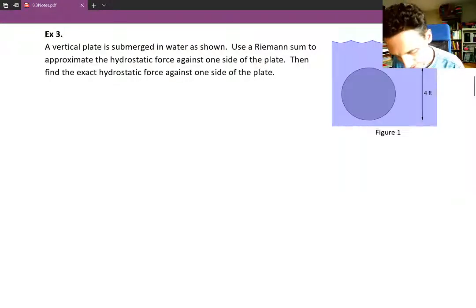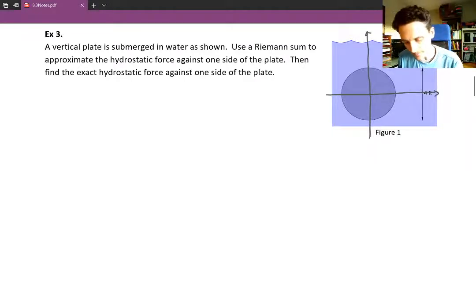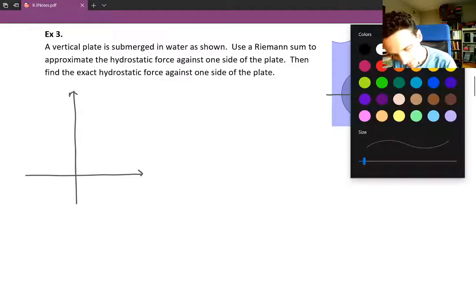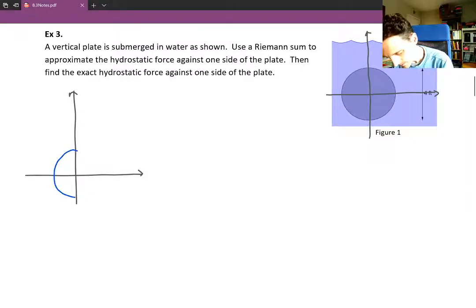So let's draw a picture first of the situation in figure one on a coordinate system. Now whenever I see a circle I like to put the circle at the origin. If we have a choice about where to put the coordinate system, let's put our coordinate system so that the center of the circle is at the origin. I'm going to draw the picture over to the left, where the center of the circle is going to be at the origin.